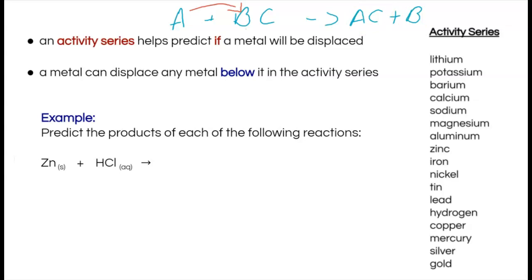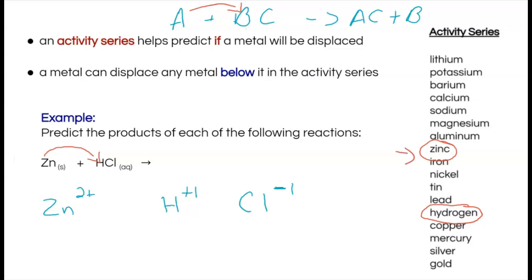I'll start by writing out the ionic charges for each element. Zinc has a two-plus charge. Hydrogen has a charge of plus one, and the chloride ion has a charge of negative one. If zinc is going to bump out hydrogen, zinc needs to be higher on the activity series. Looking at the chart, zinc is in fact higher than hydrogen, so zinc can bump hydrogen out of the way.